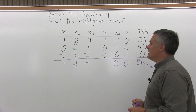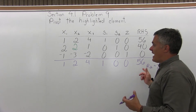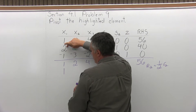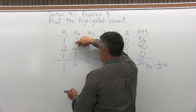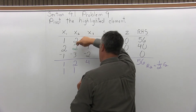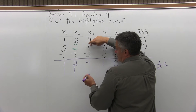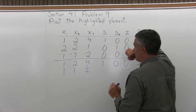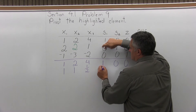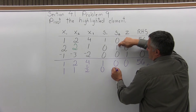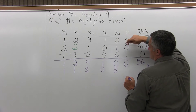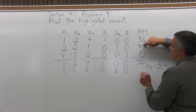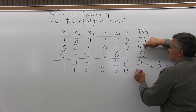I'm going to multiply 1/2 times every value in the second row. So: 1/2 times 2 is 1; 1/2 times 2 is 1; 1/2 times 1 is 1/2; 1/2 times 0 is 0; 1/2 times 1 is 1/2; 1/2 times 0 is 0; and 1/2 times 40 is 20.